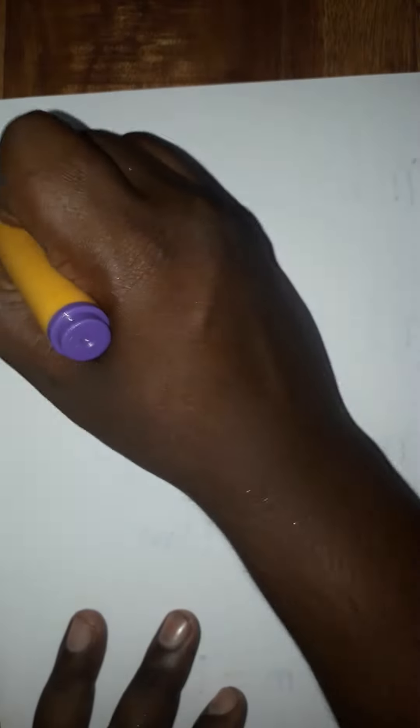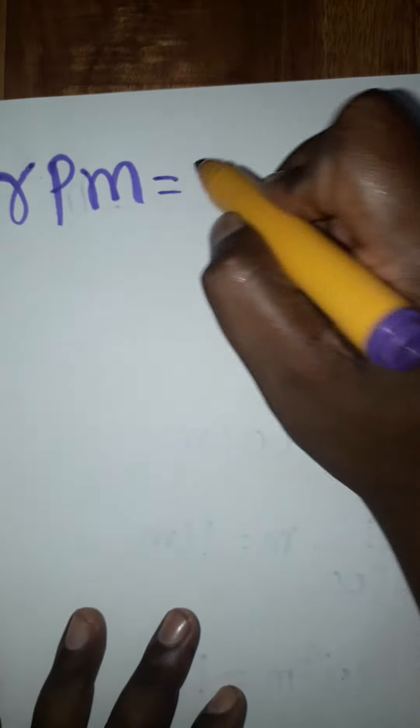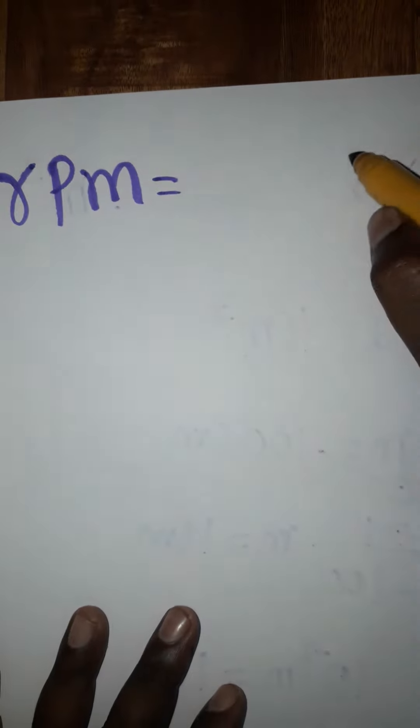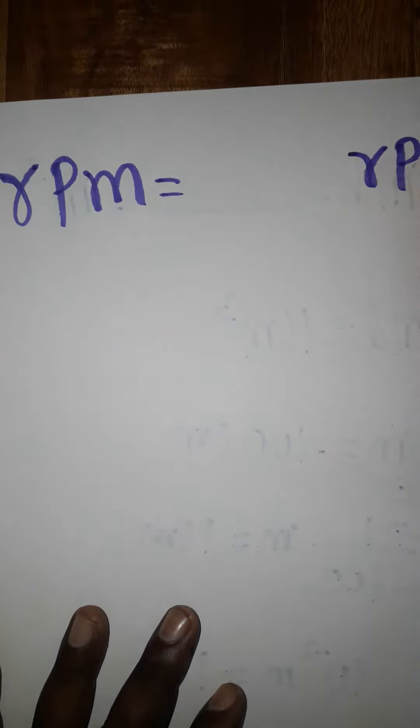Rotation, first we will learn 1 RPM is how many RPS. RPM, rotation per minute, is equal to RPS, rotation per second.